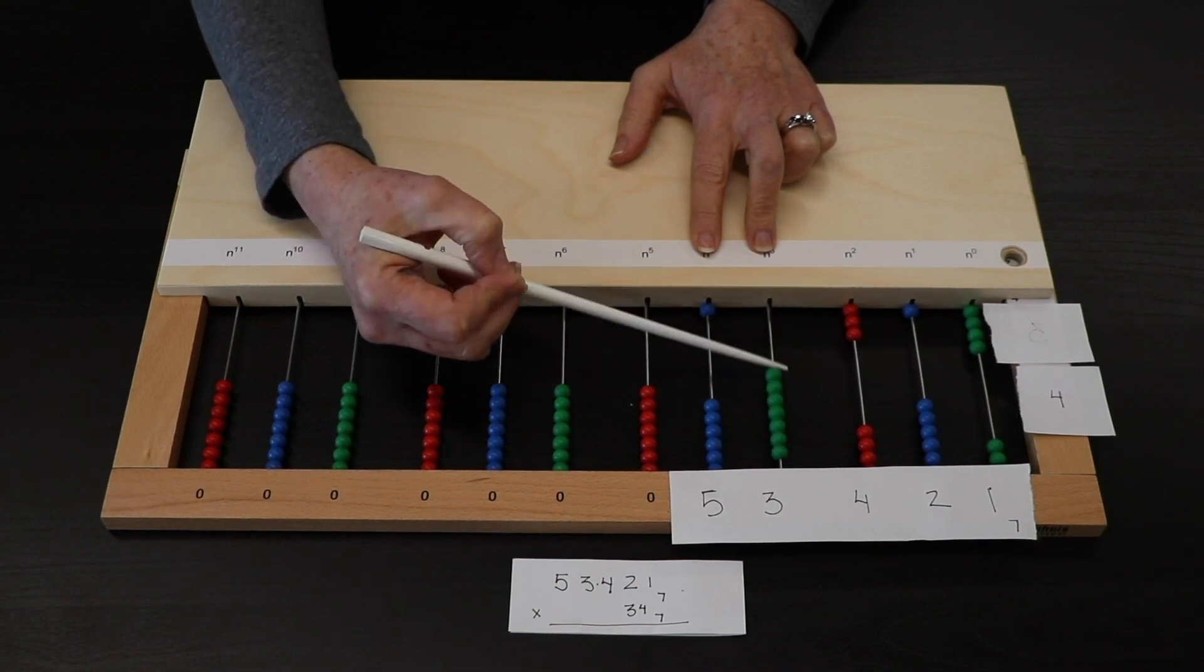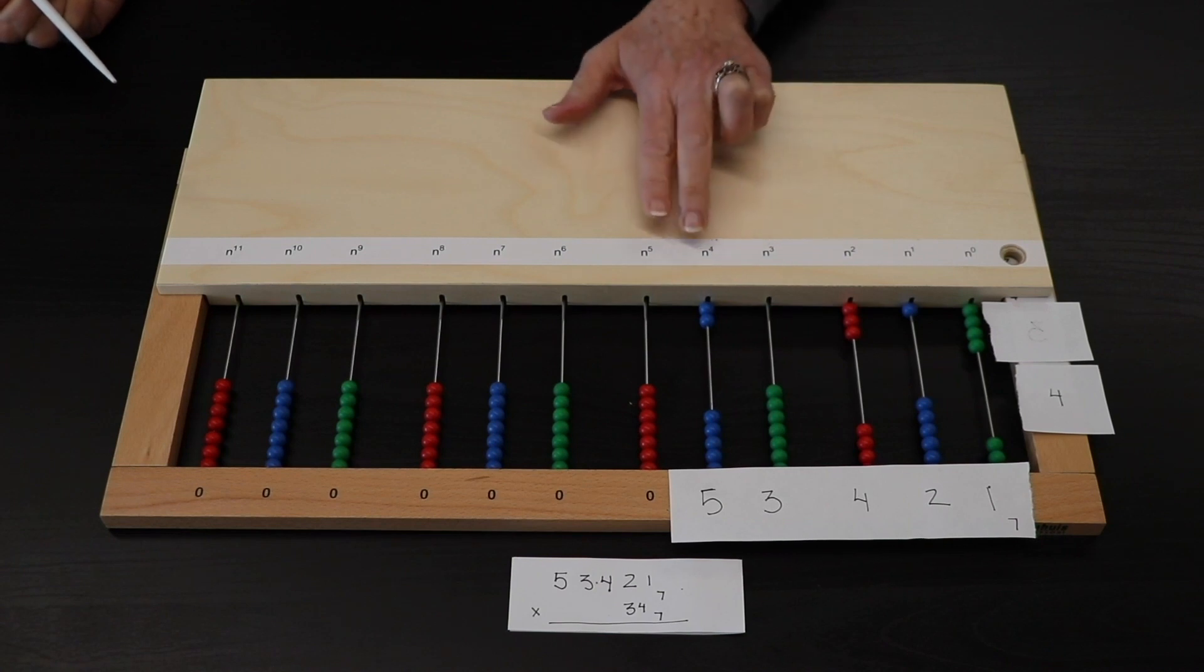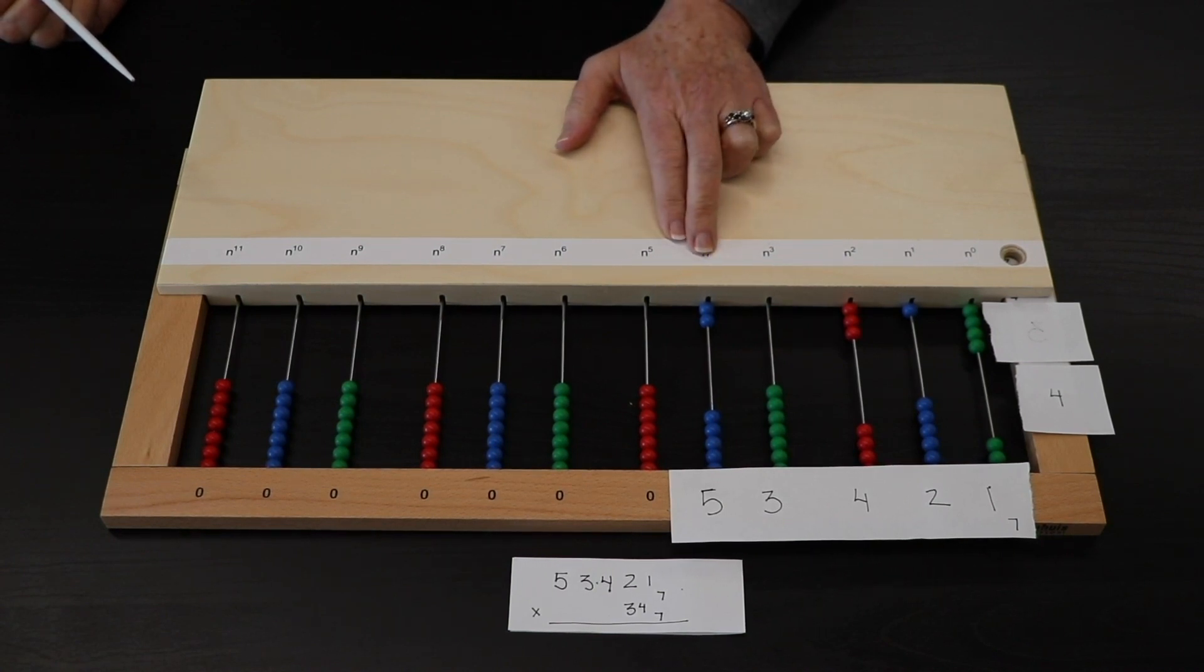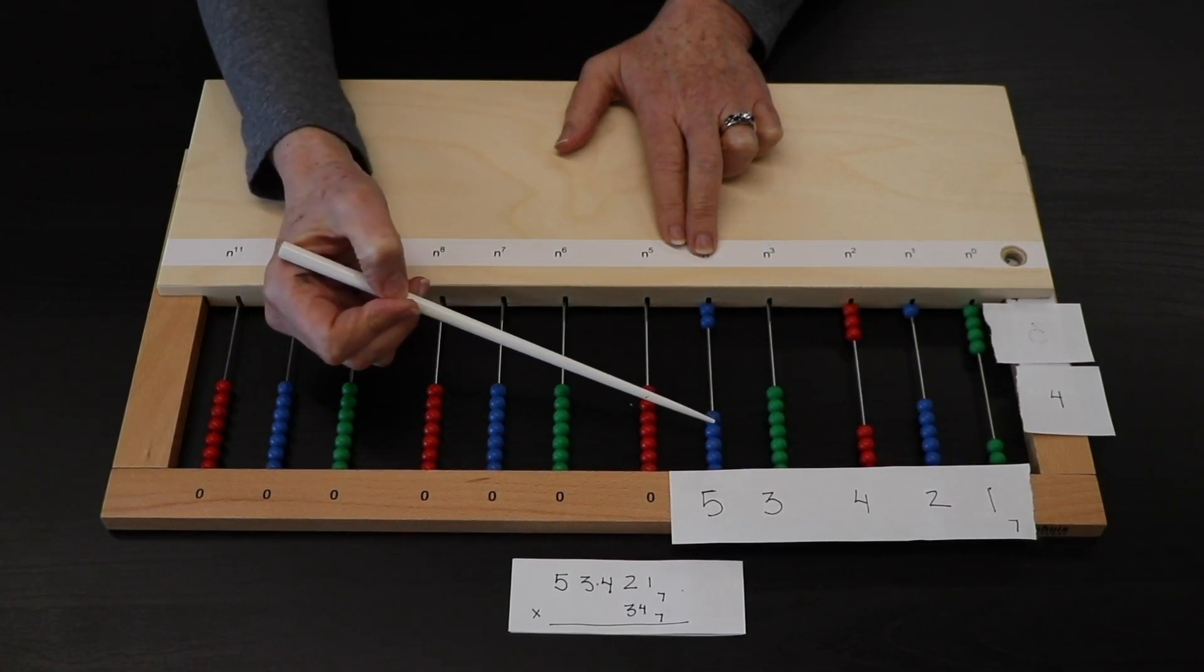And we need to exchange because we're out of beads. 5 times 4 is 20. 20 in base 7 is 2, 6.